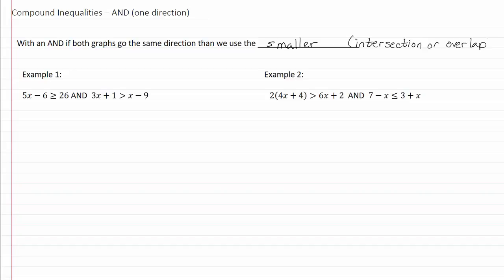Let's take a look at example one and start by solving. We'll add six to both sides. We get five x is greater than or equal to — twenty-six and six is going to give us thirty-two. Divide by five, we get x is greater than or equal to thirty-two-fifths.